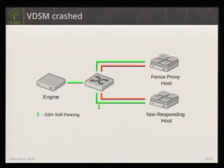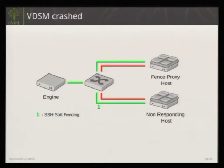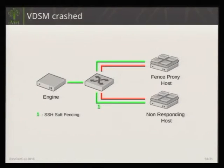This is a simple example: a host is non-responsive and we know networking is working but our VDSM agent has crashed. Fencing starts in the engine and the first thing is SSH soft fencing. We initiate an SSH connection to the server and restart the VDSM service. After that we wait; if the host comes up, everything goes smoothly. In this case, let's assume the VDSM restart works, so the fencing flow is complete.